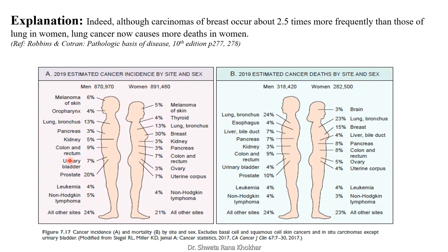The explanation: although carcinomas of breast occur about 2.5 times more frequently than those of lung in women, lung cancer now causes more deaths. Looking at estimated cancer incidence by site and sex, in women breast cancer has the highest incidence at 30%. For estimated cancer deaths by site and sex, in women high mortality is seen with carcinoma lung at 23%, compared to carcinoma breast at 15%.